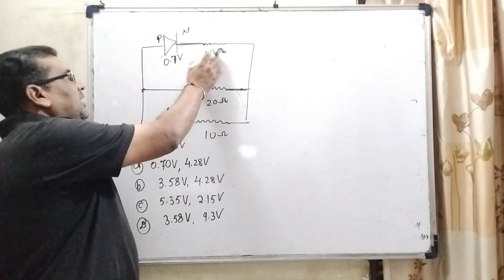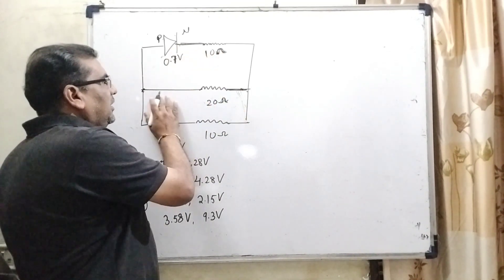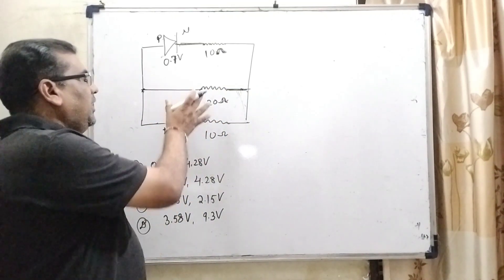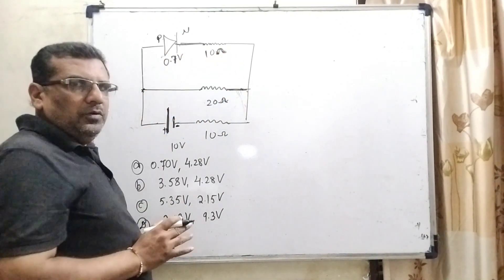And the resistance is connected with this diode, that is 10 ohm in between. Here 20 ohm resistance is connected. We have to calculate the potential difference between this point and this point.